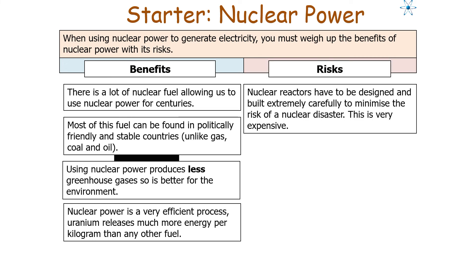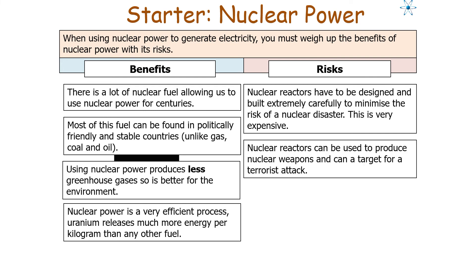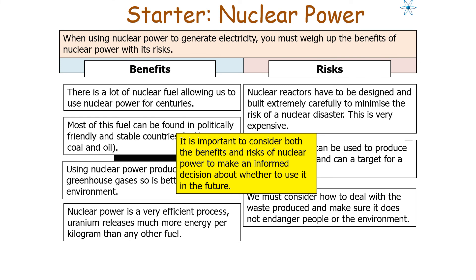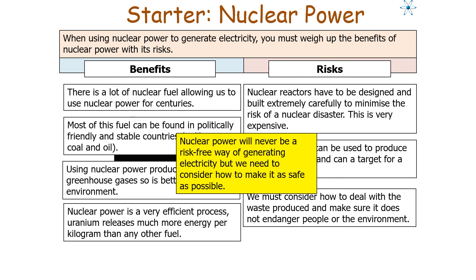The risks of nuclear power include: reactors must be designed and built extremely carefully to minimise the risk of nuclear disaster; nuclear reactors can be used to produce nuclear weapons and can be targets for terrorist attacks; and waste produced must be managed to ensure it doesn't endanger people or the environment. It's important to consider both risks and benefits to make an informed decision. Nuclear power will never be risk-free, but we need to make it as safe as possible.